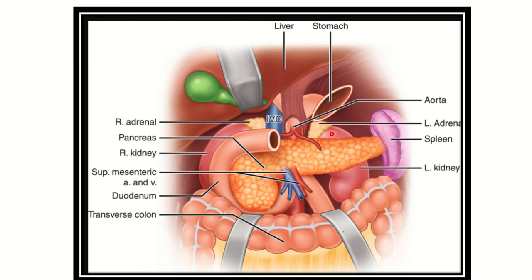We can see the left adrenal gland here. It is located just over the left kidney. The left adrenal gland is also very closely related to the stomach and to the crus of the diaphragm. Here we can see the crus of the diaphragm, and then there is the pancreas, which is also very closely related to the left adrenal gland.